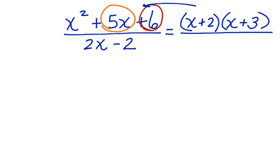Now in the denominator, we can factor out the greatest common factor of 2 from both of these terms. And we end up with x minus 2.